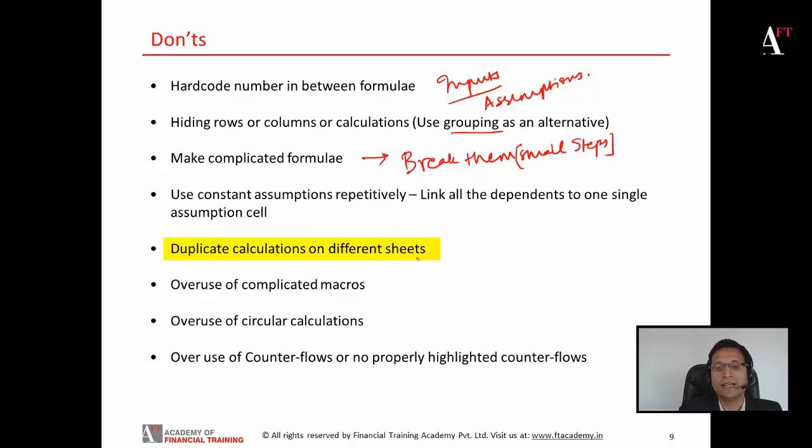You should not duplicate calculations on different sheets. This again could be a reason for potential errors. You should not use a lot of circularity and a lot of macros. They can break the model down sometimes and make the model slow. Plus, it is difficult for all the users to understand the macros and coding that you have done in the model. So they are better, lesser used or avoided.